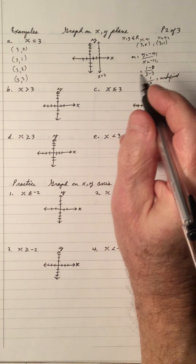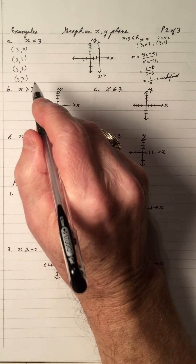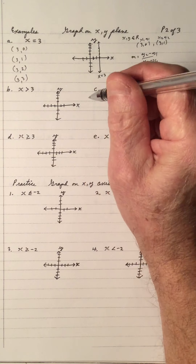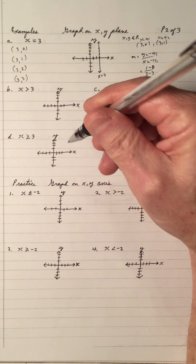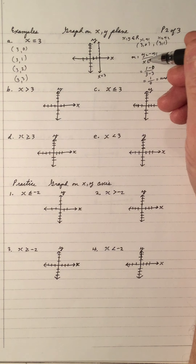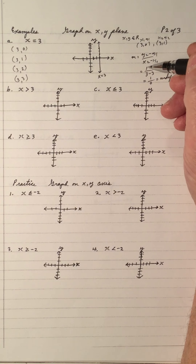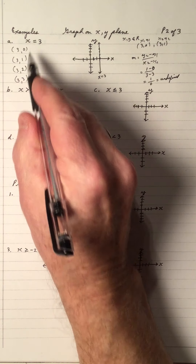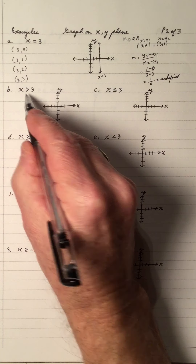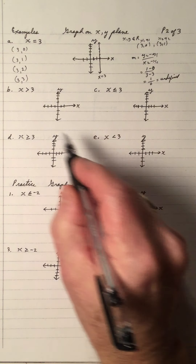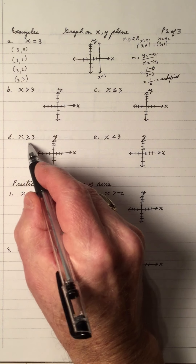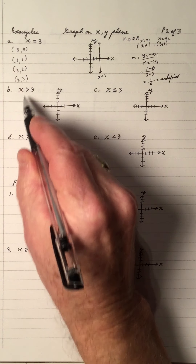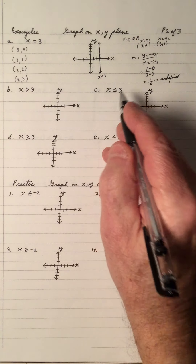A vertical line has an equation of x equals some number, and it's the number of the x coordinate. Let's look at graphing some inequalities with this boundary line. The boundary line for all three of these is the equal sign, which is x equals 3.